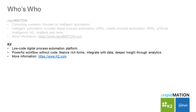K2 is a low-code digital process automation platform that allows companies to create modern process applications, automate workflows and accelerate their digital transformation. K2 allows you to create these modern process applications using powerful workflow, feature-rich forms, and it provides the ability to seamlessly integrate with your data and provides deeper insight into your processes through analytics.